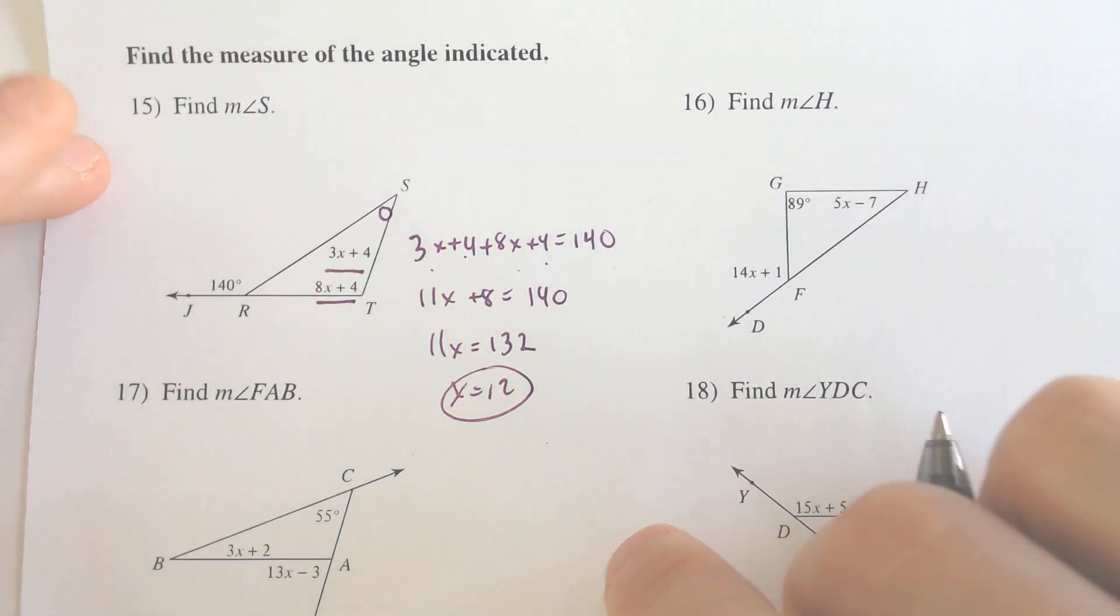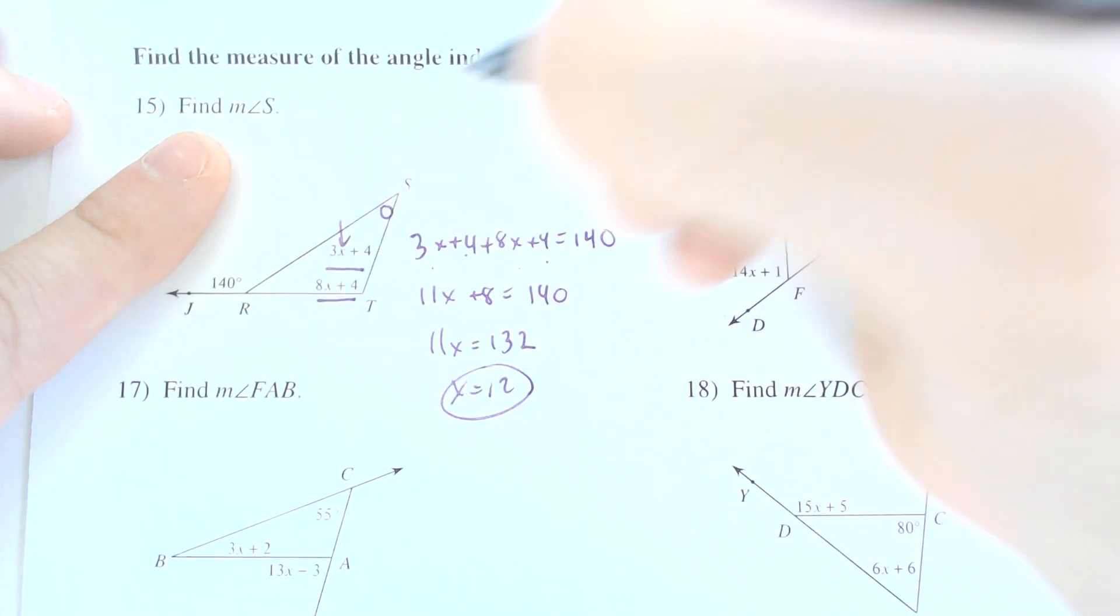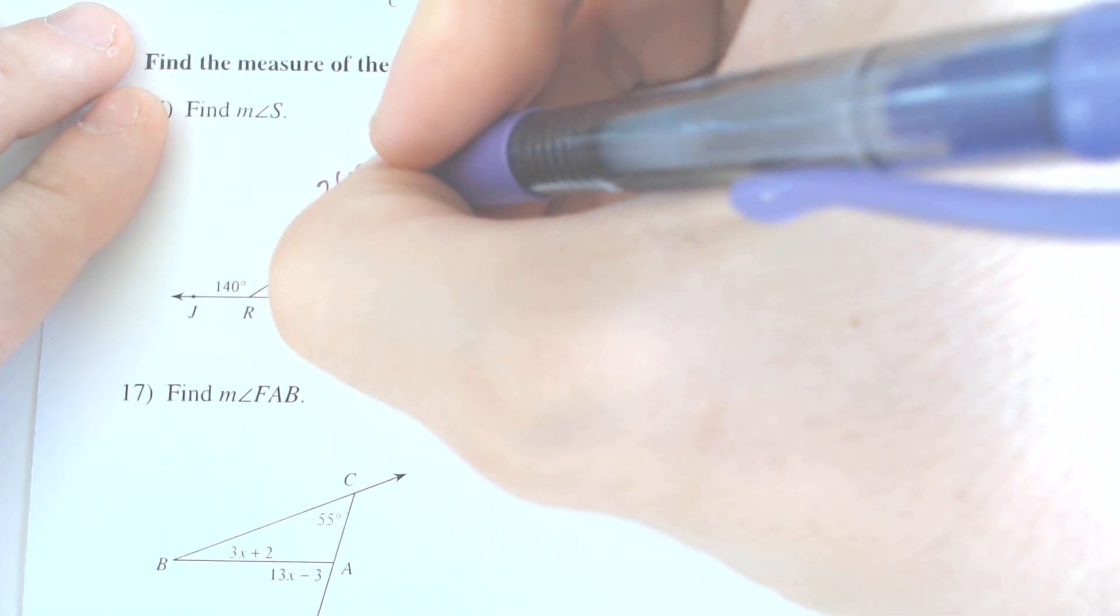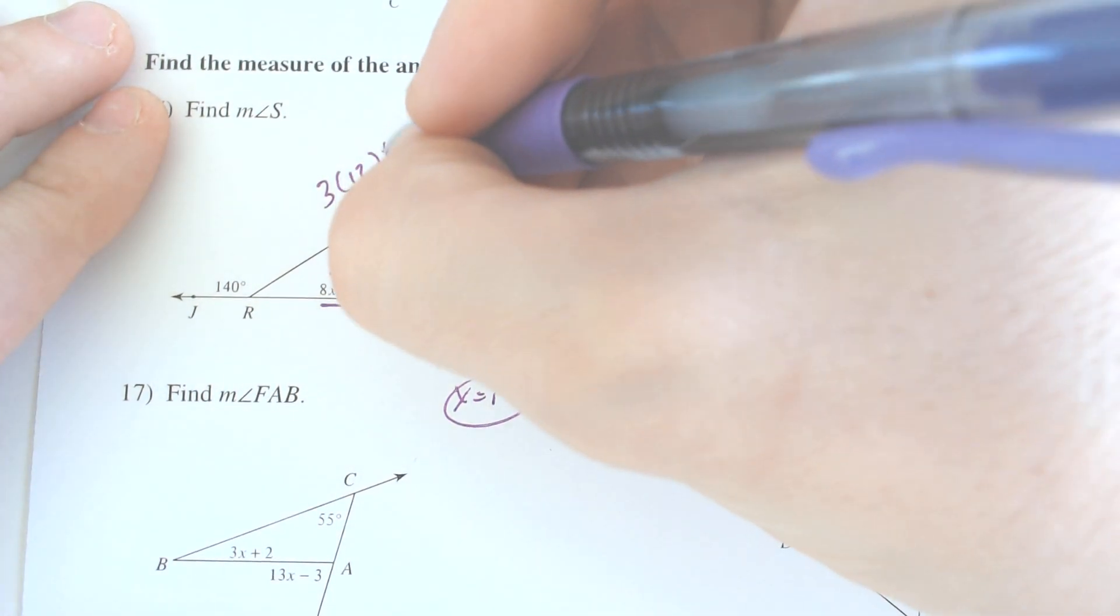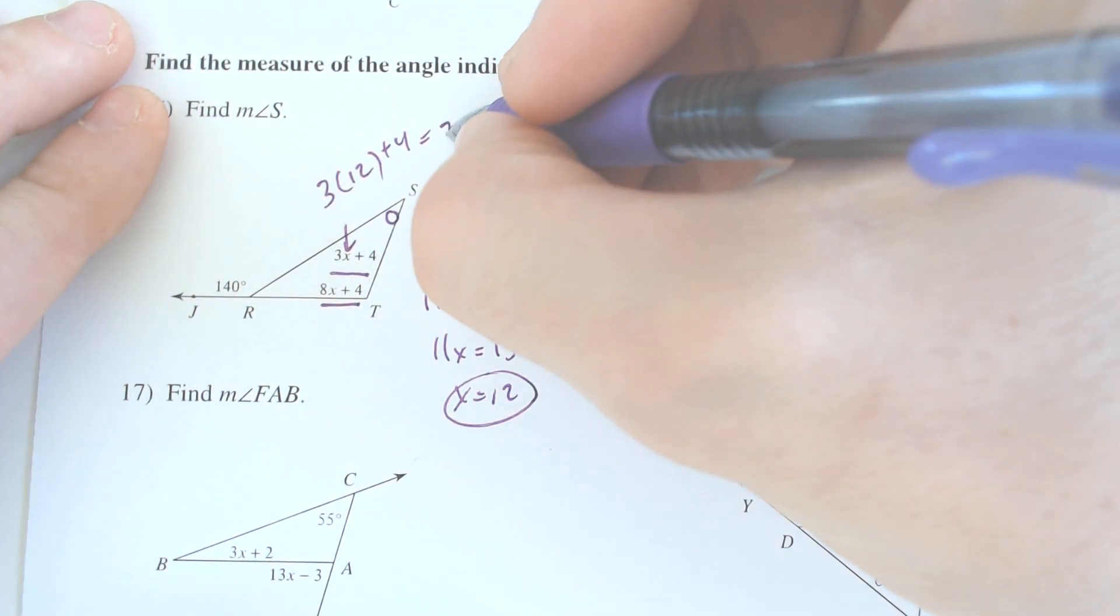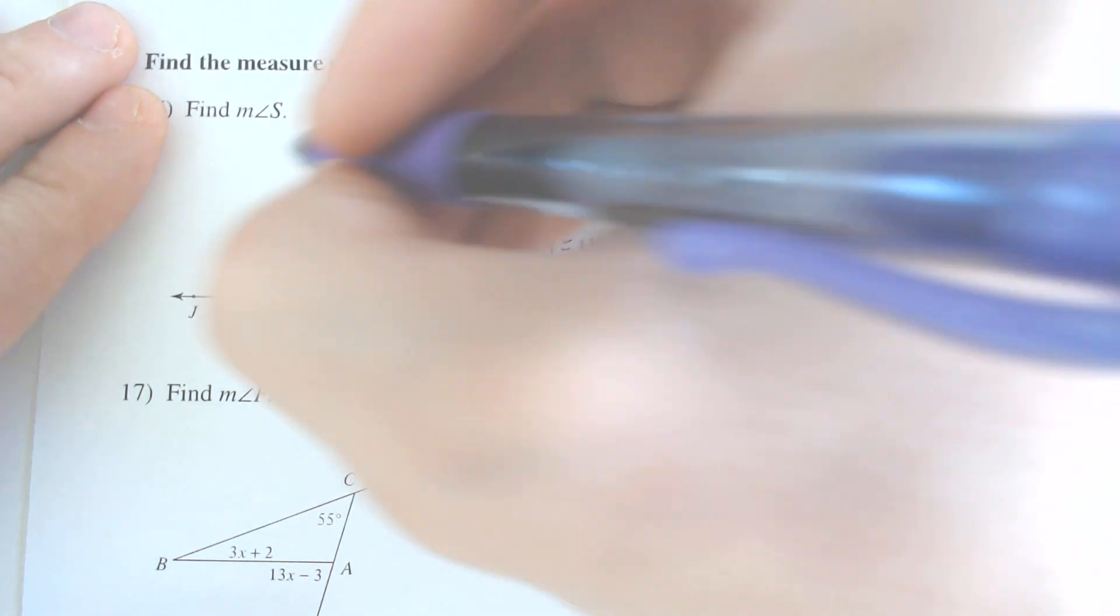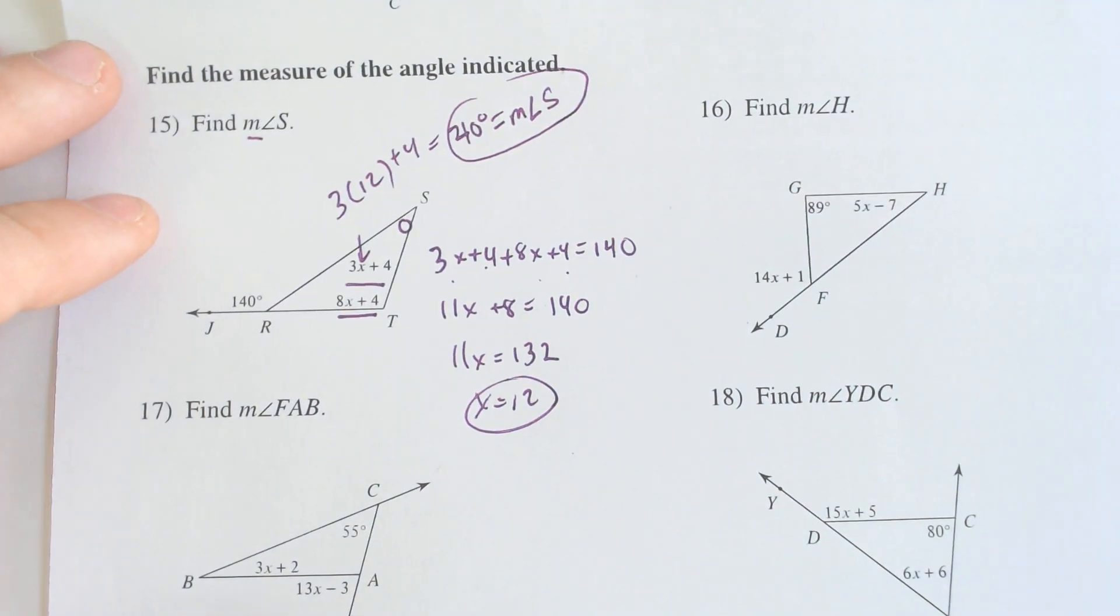If x is equal to 12 and you have to find the measure of angle S, then you have to substitute that 12 in right here. 3 times 12 plus 4 ends up being 36 plus 4. 36 plus 4 is 40 degrees would equal the measure of angle S. If you're ever wondering what does that M stand for, it stands for measure.